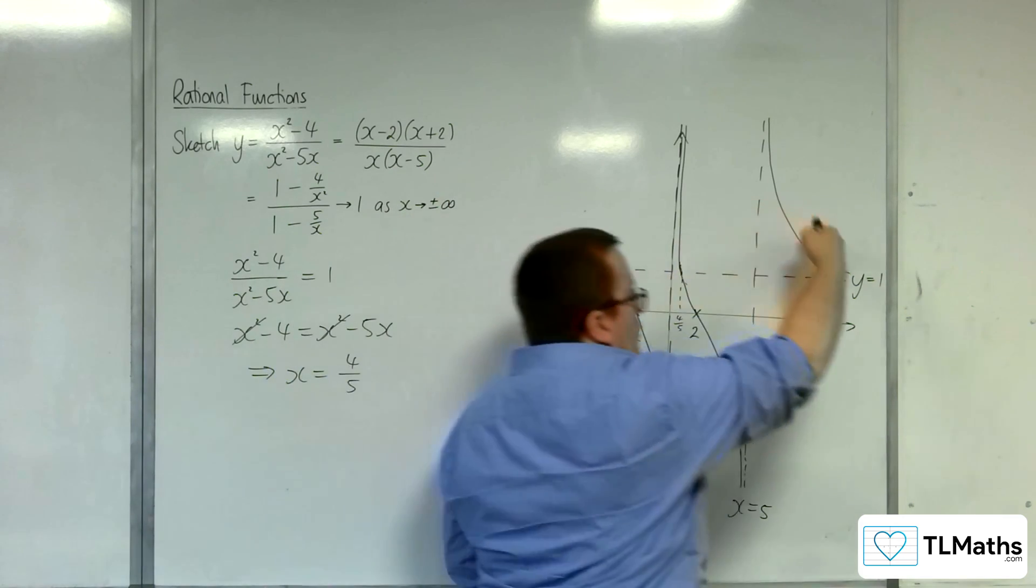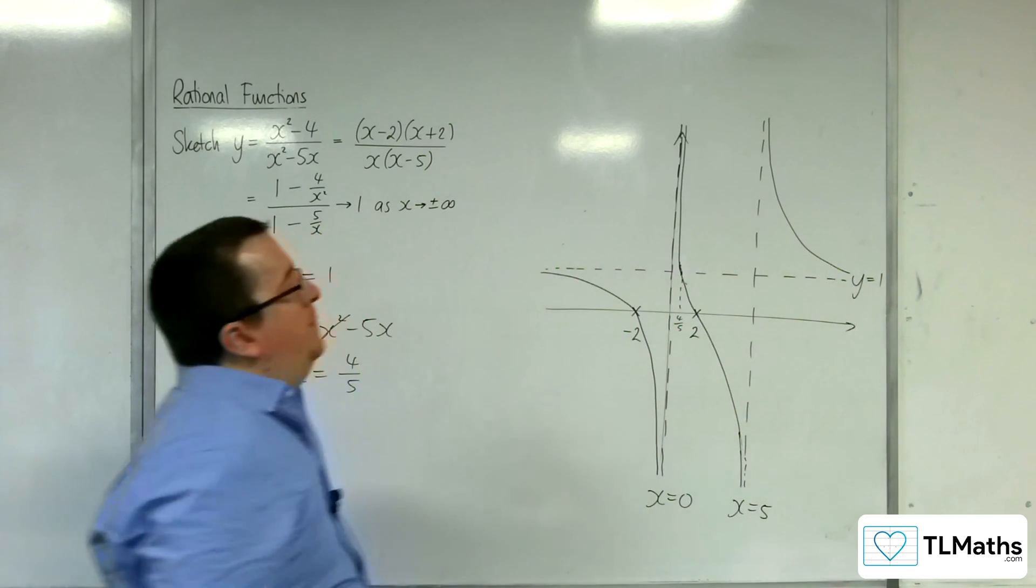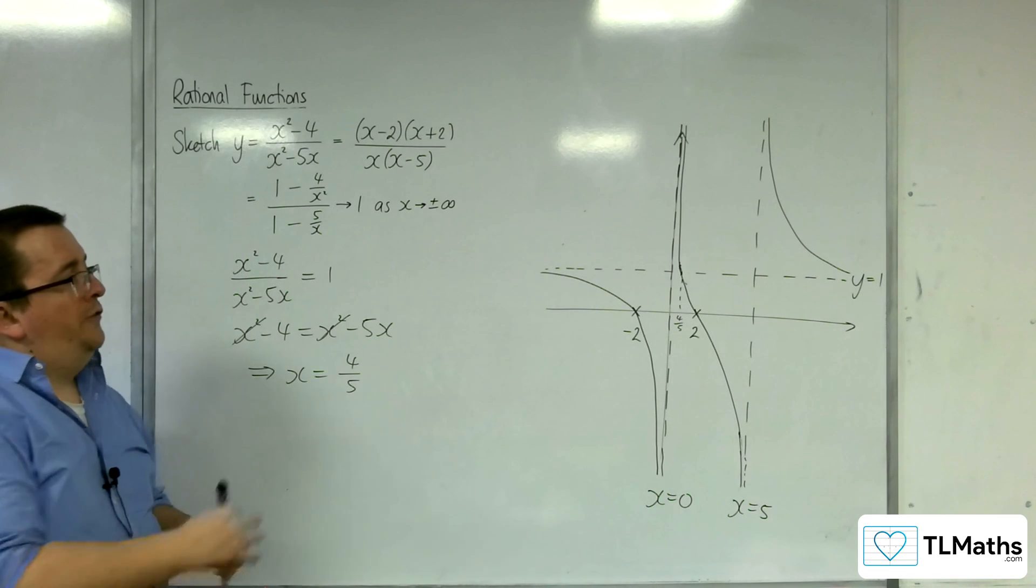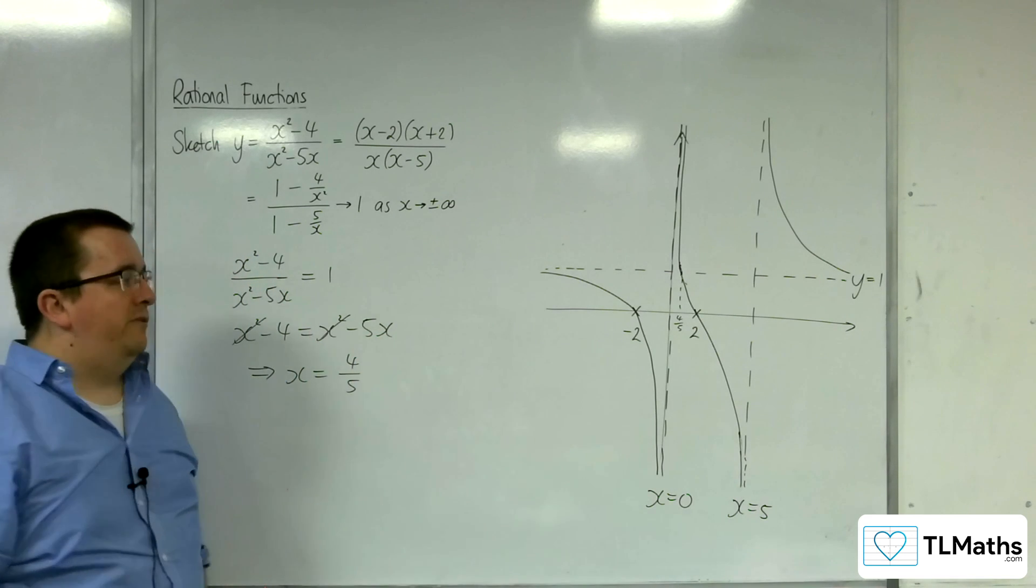And it's not going to cross the horizontal asymptote here either, because 4 fifths is just the only point of intersection. And so this is what the curve must look like.